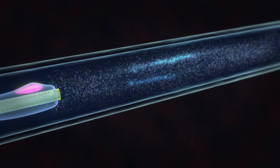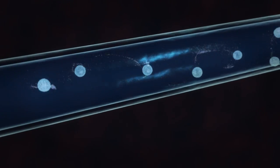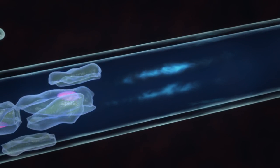Schwann cells then activate macrophages to engulf and digest the debris and secrete signaling factors to create a growth cone.